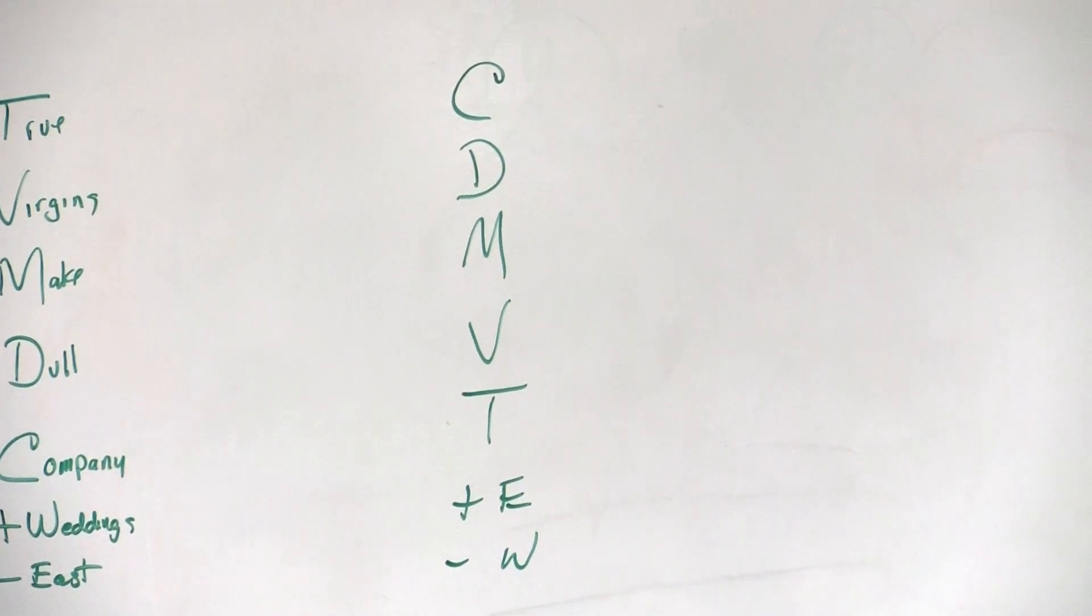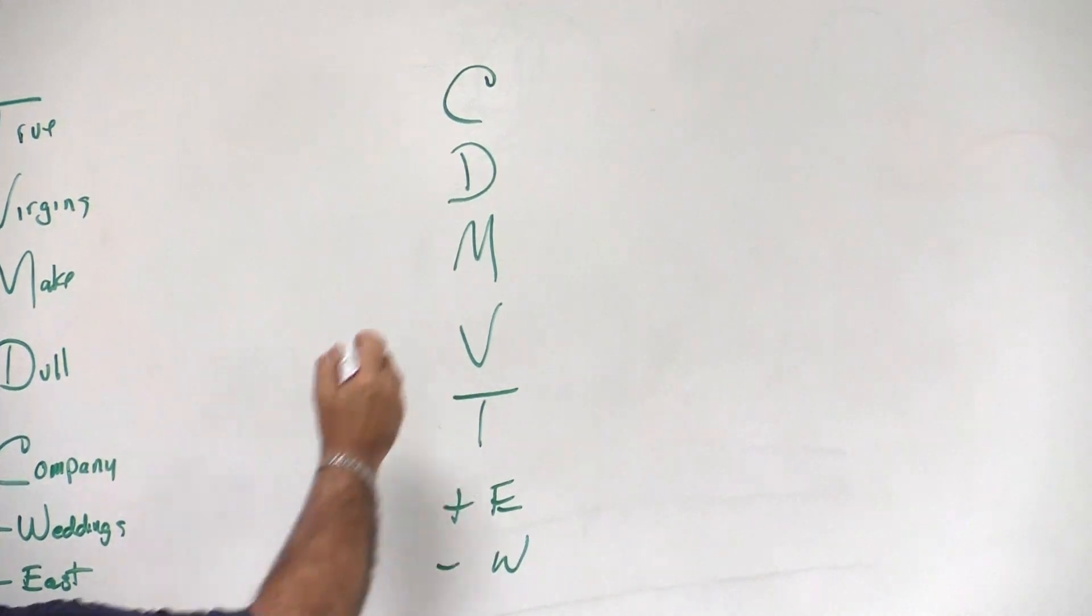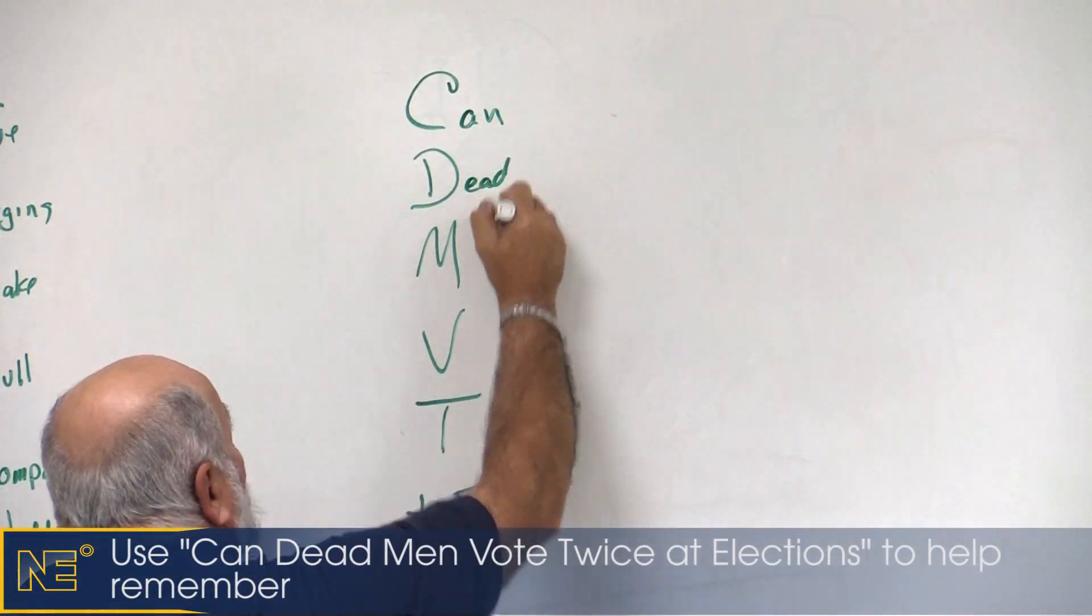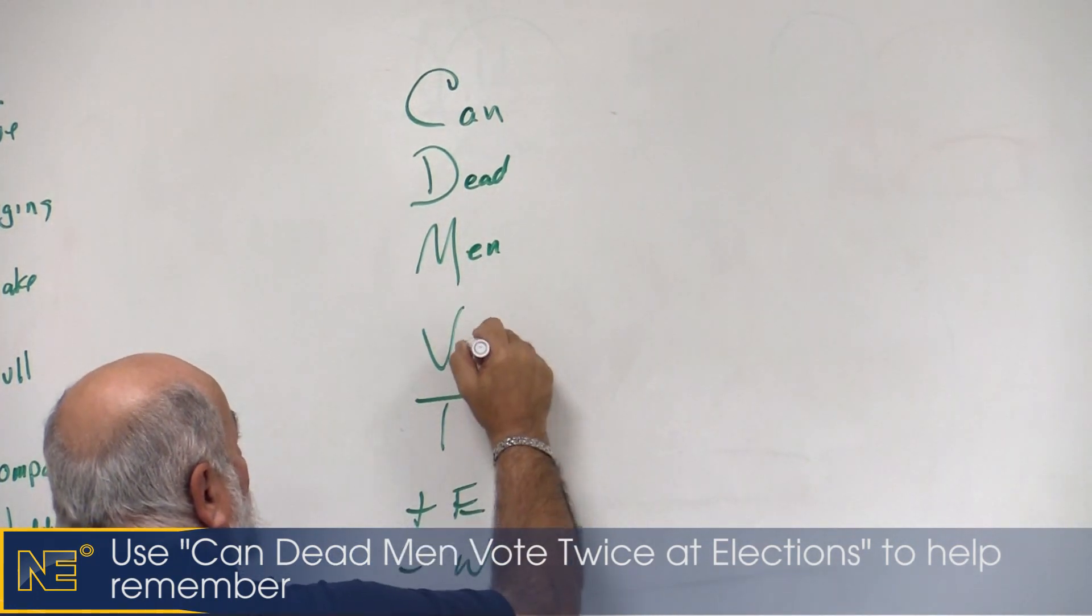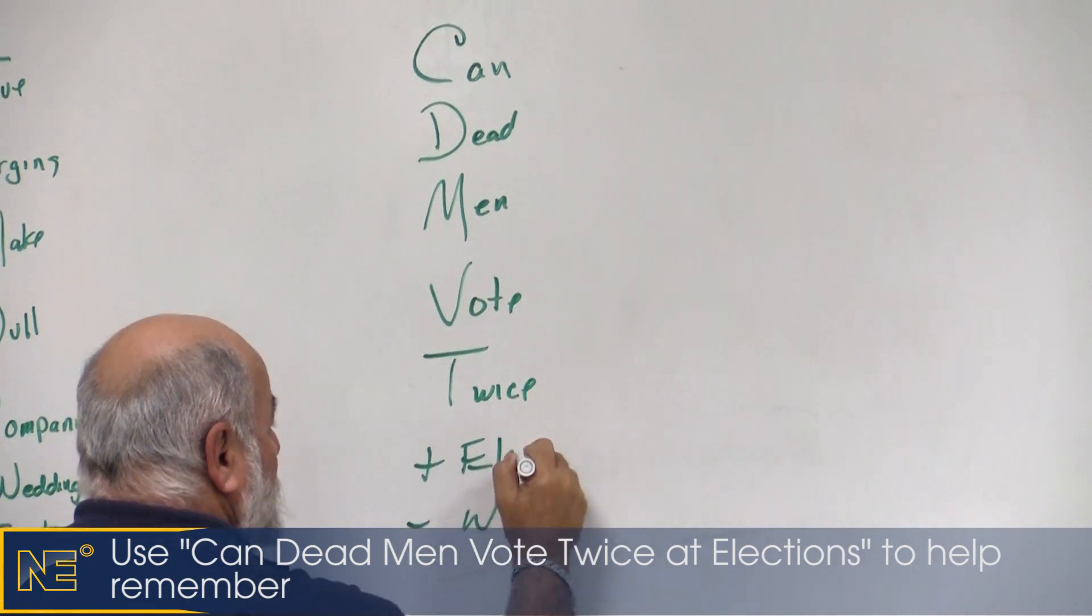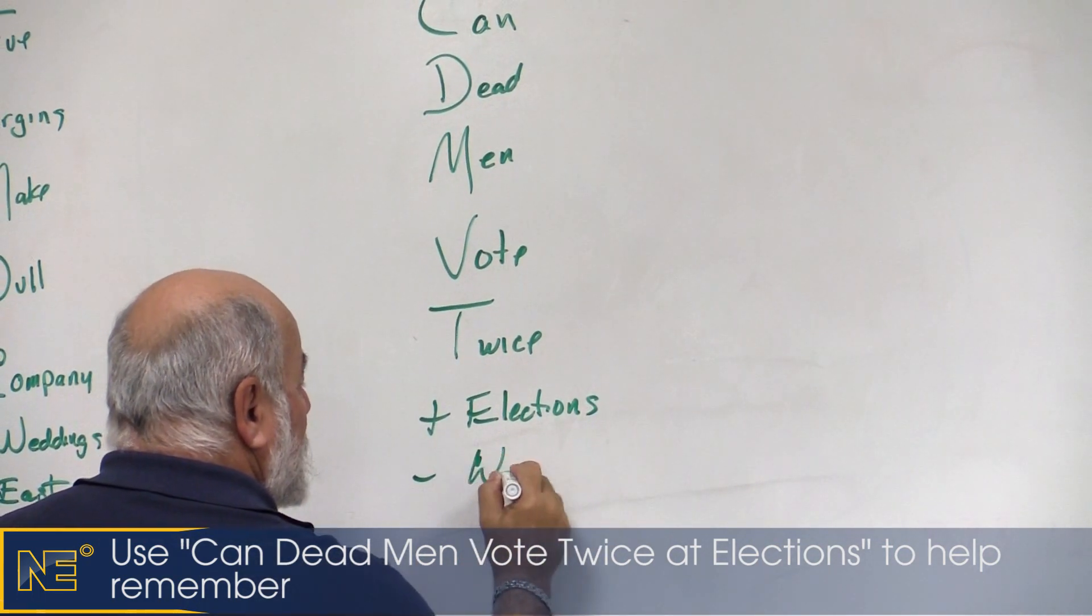We just took all these letters and flipped them around, but to remember that, we say: can dead men vote twice at elections? Subtract west.